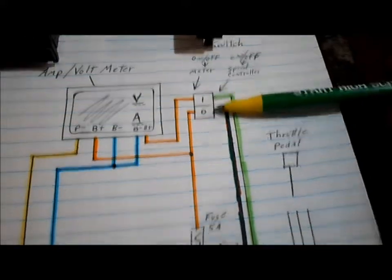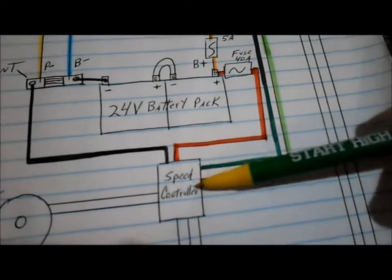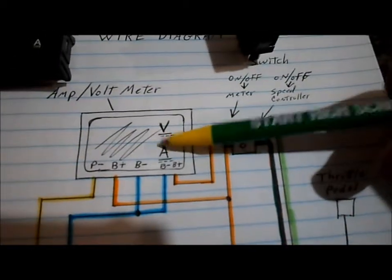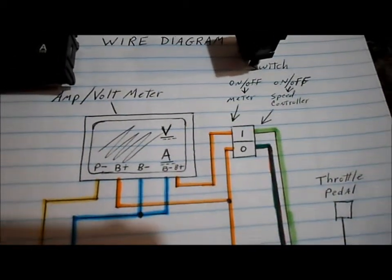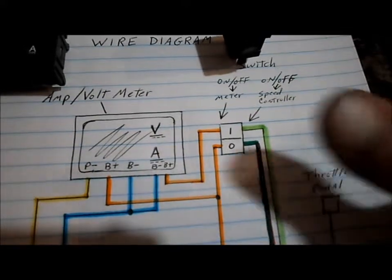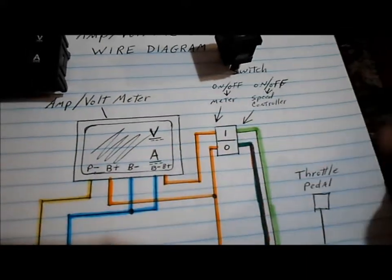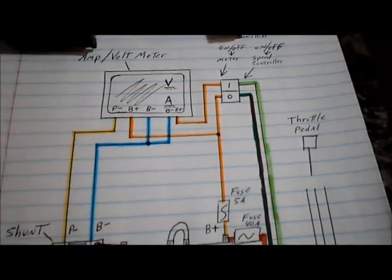So one side of the switch we're going to use to turn on and off the speed controller. And the other side of the switch is going to turn on and off the amp and volt meter. That way just one flip of the switch shuts everything off or one flip of the switch powers her up and she's ready to go.